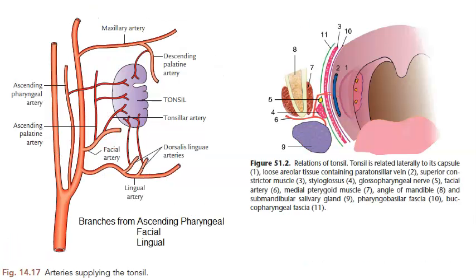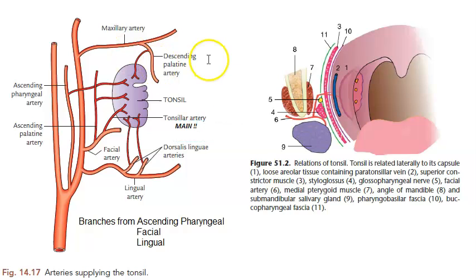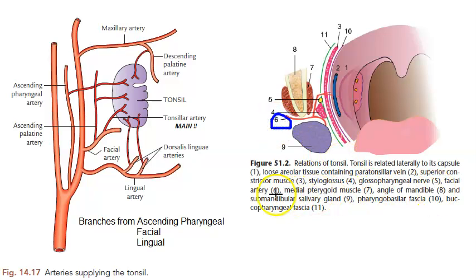So which is the main artery? The main one is the tonsillar artery, coming from the facial artery. That is why in this diagram, number 6 is marked as the facial artery. The facial artery is giving two branches: one is the tonsillar artery and the other is the ascending palatine artery.